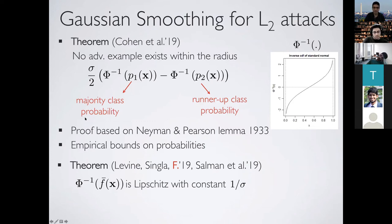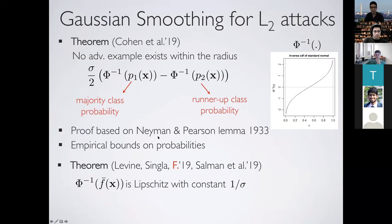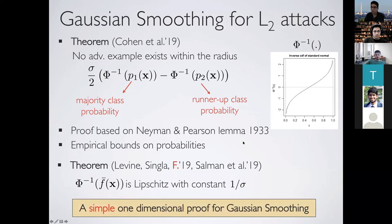A simpler intuition from Salman et al.: when you do smoothing, the composition of the smooth function f-bar with Phi-inverse (the inverse CDF of the standard normal) is Lipschitz with constant 1/sigma. This immediately gives the certification radius: if a function is Lipschitz, changing the input by some amount gives a bound on the change in output, which directly yields the robustness certificate.